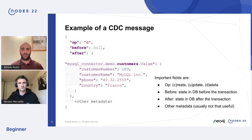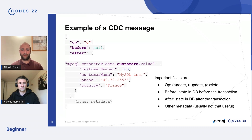Let's take a quick look at an example of a message that Debezium can produce. The message is in JSON format and represents the creation of a row inside a table called customers inside a MySQL database. We can understand this from three main fields. The first is called 'op' and represents the kind of operation — in this case, a creation indicated by the 'c' character. We also have the 'before' and 'after' fields. Before and after represent the state before and after the event occurred. Before a creation, we have nothing, represented by null. After, we have a customer number, a name, a phone, and a country.